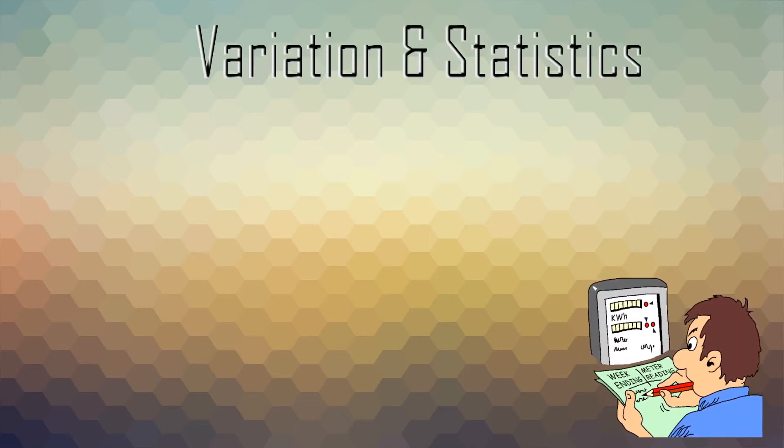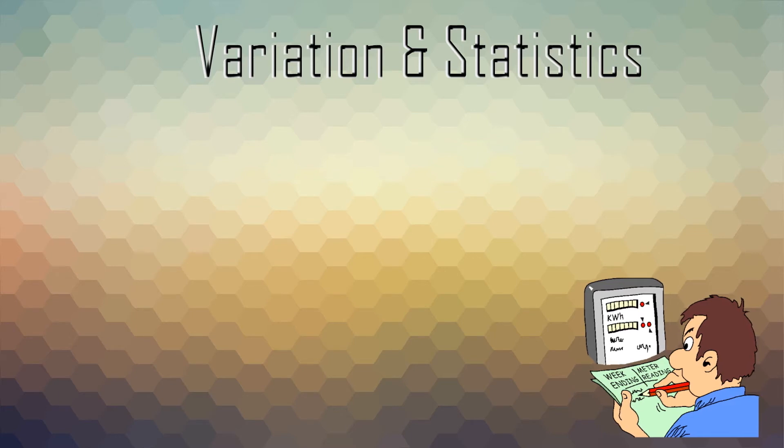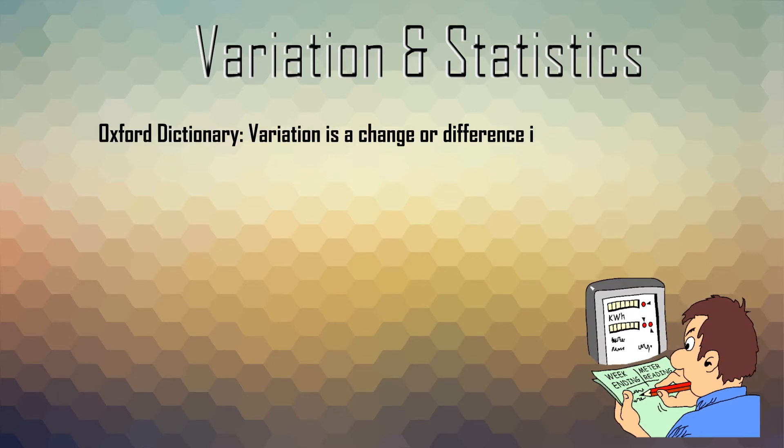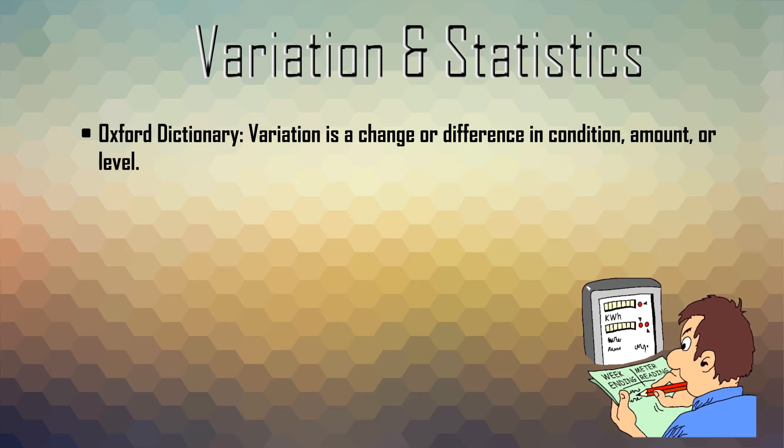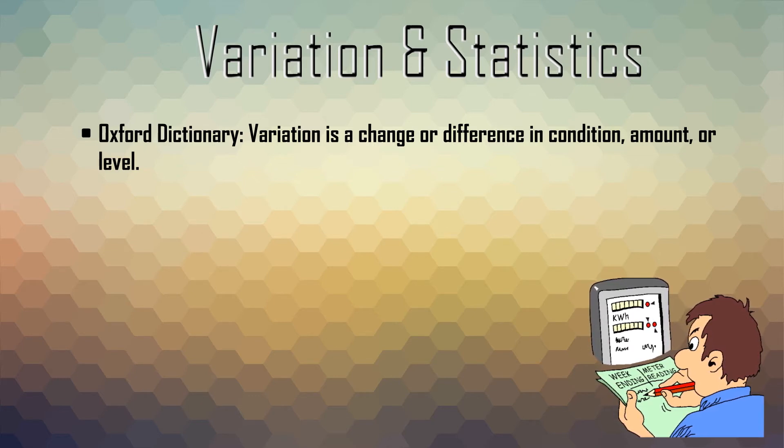It is important for us to understand what is the meaning of variation. According to Oxford Dictionary, variation is a change or difference in condition, amount or level.